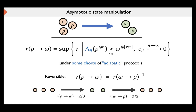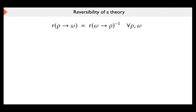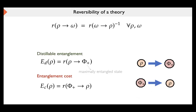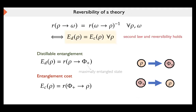In this context, we say a transformation is reversible if the rate from ρ to ω is the same as the inverse of the rate from ω to ρ — meaning if we go from ρ to ω and back to ρ, the overall rate equals one. We say the theory is reversible if all pairs of states are reversible in this sense. Luckily, we don't have to check every single pair: we can define two fundamental quantities — distillable entanglement and entanglement cost — which characterize the rates of transformations into and from the maximally entangled two-qubit state. Reversibility is then equivalent to asking: is the distillable entanglement equal to entanglement cost?